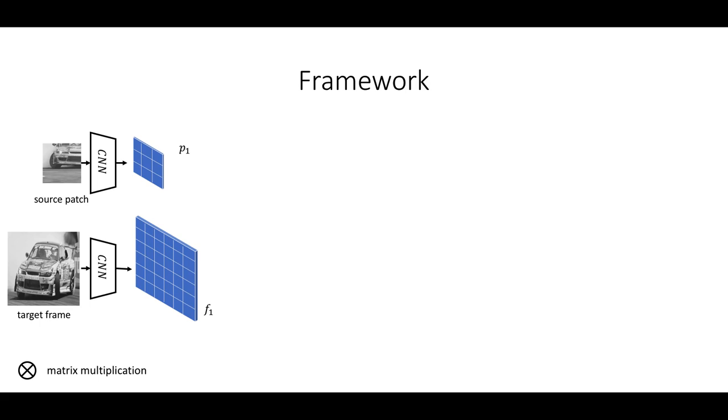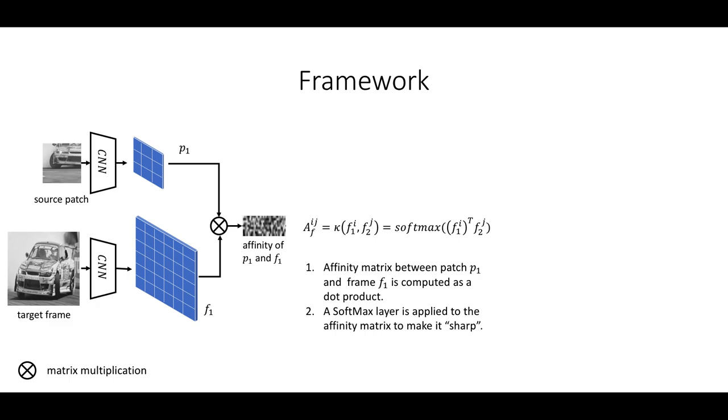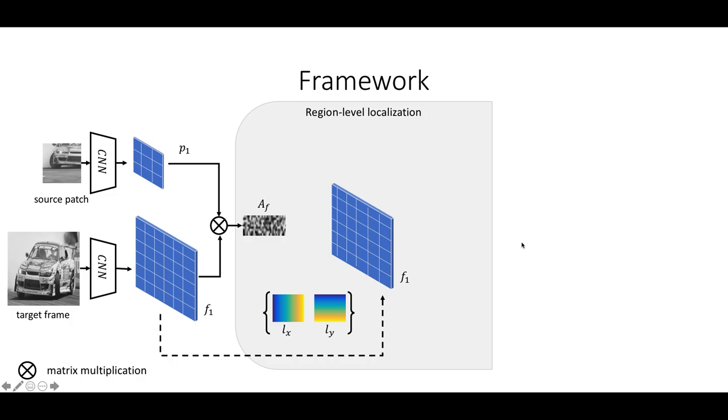We obtain image features of the source patch and the target frame simultaneously using a shared CNN, and calculate a rectangle of the affinity matrix representing the similarities between these two feature maps. We also add a softmax layer to ensure that for each row, it represents the probabilities with respect to all the pixels or candidate pixels.